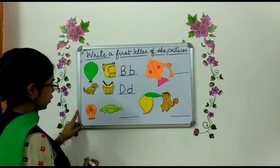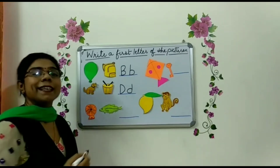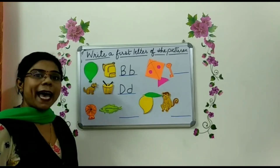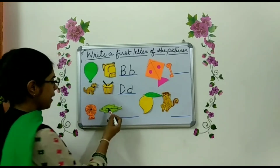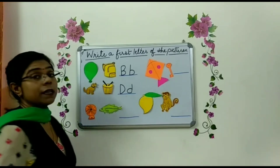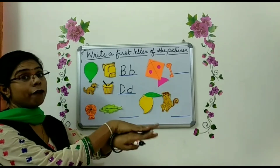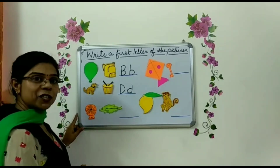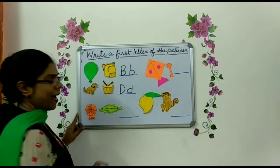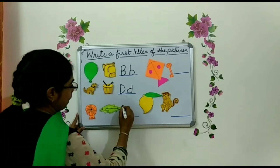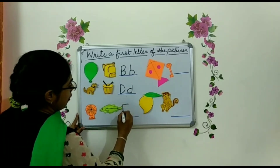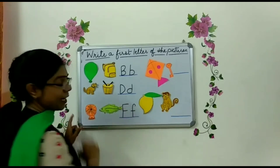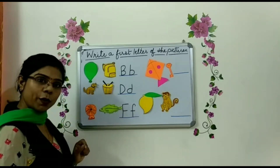Now next picture. What is this? Yes, this is F for fan. And this one? Yes, this is F for fish. So the first letter of the picture is F. F for fan, F for fish. Okay?